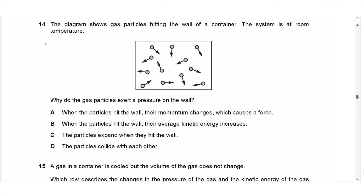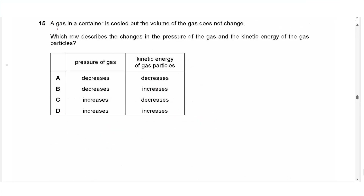Question 14: Gas particles hit the wall of a container at room temperature. The correct explanation is that when particles hit the wall their momentum changes, which causes a force; force divided by area causes pressure. The answer is A. The other options — that kinetic energy increases on impact, particles expand, or particles collide with each other — are all incorrect.